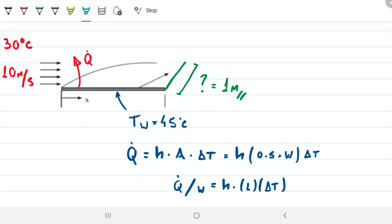It would be really easy if we had h, but we don't, so we need to find h. Let's start with our film temperature. What is our film temperature for this situation? It will be the temperature between 30 and 45. That will render 37.5°C, which is the same thing as 310.5 Kelvin. So I need to grab properties at 310.5 Kelvin.